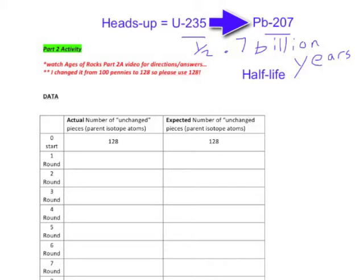Every round, starting with round zero — the time at which the igneous rock initially formed — as we go from round zero to round one, 0.7 billion years go by. As we go from round one to round two, another 0.7 billion years, and so on, all the way down through this process.